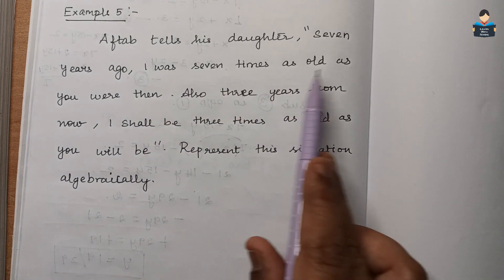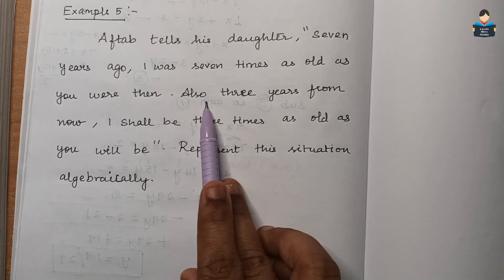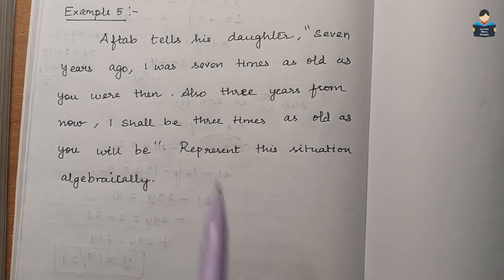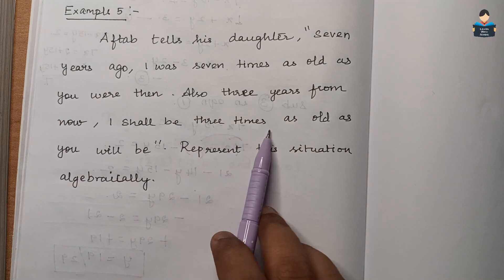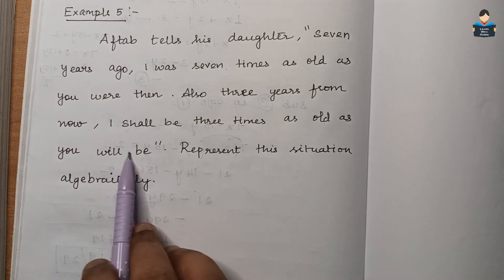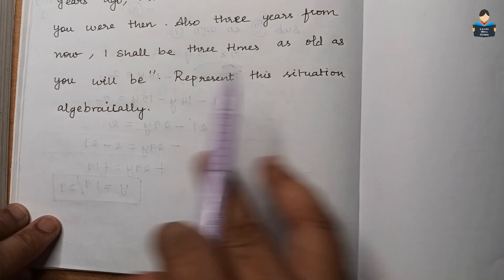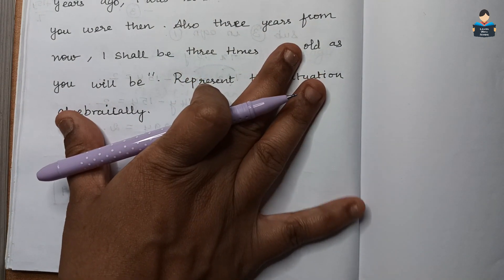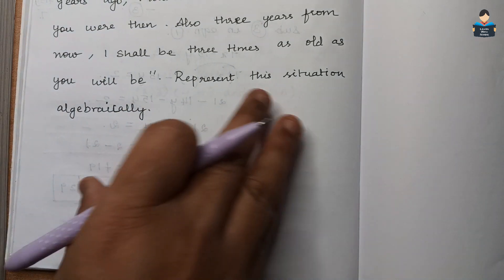'Also, 3 years from now I shall be 3 times as old as you will be.' We need to represent this situation algebraically. Let the present age of Aftab be x years and the present age of his daughter be y years.